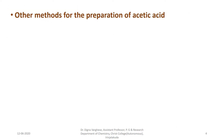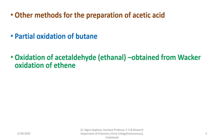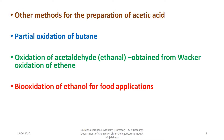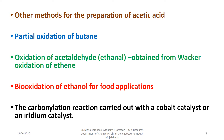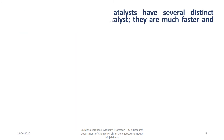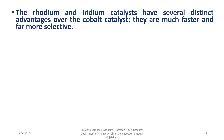Other methods for the preparation of acetic acid include: partial oxidation of butane; oxidation of acetaldehyde obtained from Wacker oxidation of ethene; bio-oxidation of ethanol for food applications; and the carbonylation reaction carried out with a cobalt catalyst or an iridium catalyst. The rhodium and iridium catalysts have several distinct advantages over the cobalt catalyst — they are much faster and far more selective.